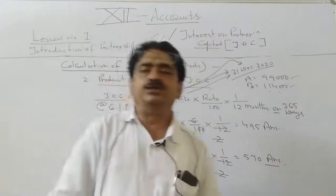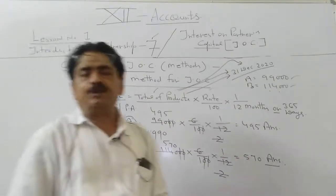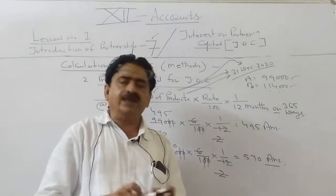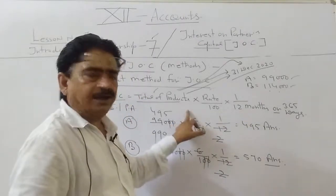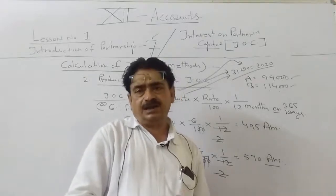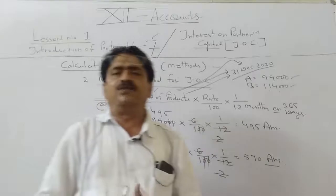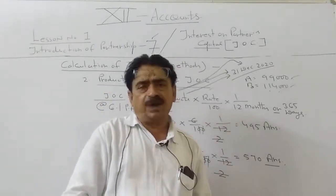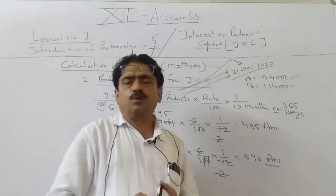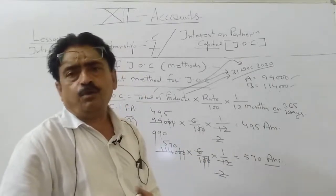So students, in this video you learned two methods to calculate IOC. The Simple Interest Method is used when during the year no additional capital is introduced and no capital is withdrawn by partners. The Product Method is used when during the year additional capital is sometimes introduced or capital is withdrawn — it is a time-saving method. In the exam, if additional capital is being introduced or withdrawn, use the Product Method. Thank you very much for watching this video with interest.